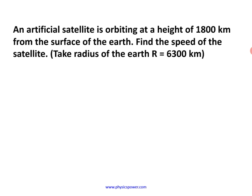An artificial satellite is orbiting at a height of 1800 km from the surface of the earth. Find the speed of the satellite. They gave the height of the satellite from the surface of the earth, and also the radius dimension.